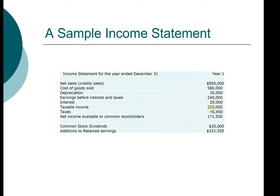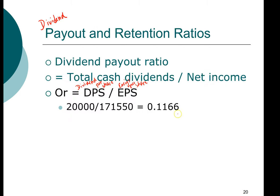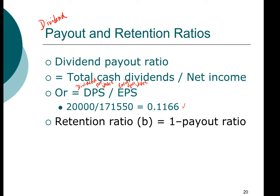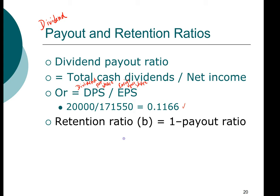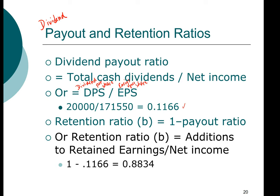In our example, dividends were $20,000 and net income is $171,550, giving a dividend payout ratio of 11.66%. That tells us that for every dollar in net income the company generates, it pays out $0.1166 in dividends and keeps $0.8834 as retained earnings. That part we call the retention ratio. The retention ratio is one minus the dividend payout ratio — so in our example, that is 88.34%. Another way to compute it is additions to retained earnings divided by net income.